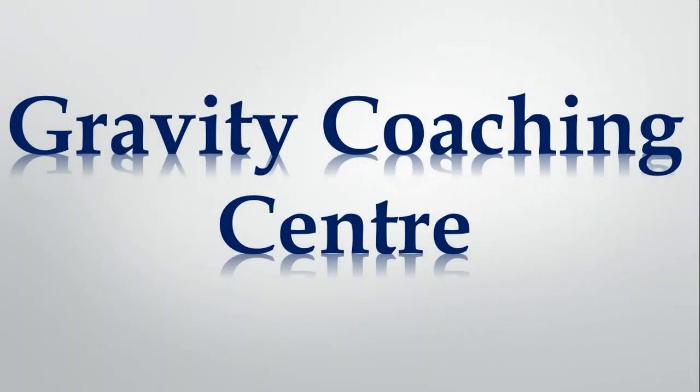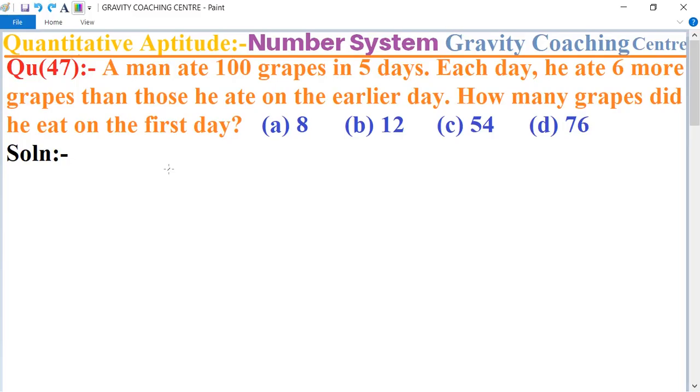Welcome to our channel Gravity Coaching Center. Quantitative Aptitude chapter number system, question number 47. A man ate 100 grapes in 5 days and each day he ate 6 more grapes than those he ate on the earlier day. How many grapes did he eat on the first day?